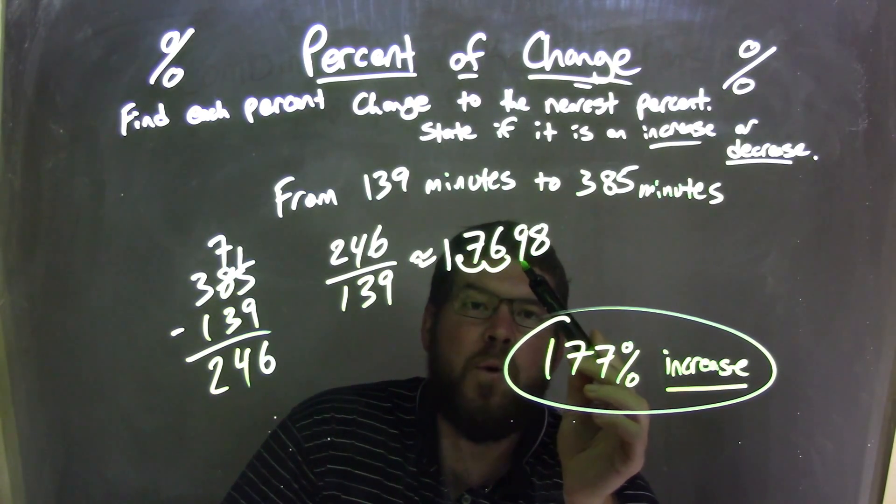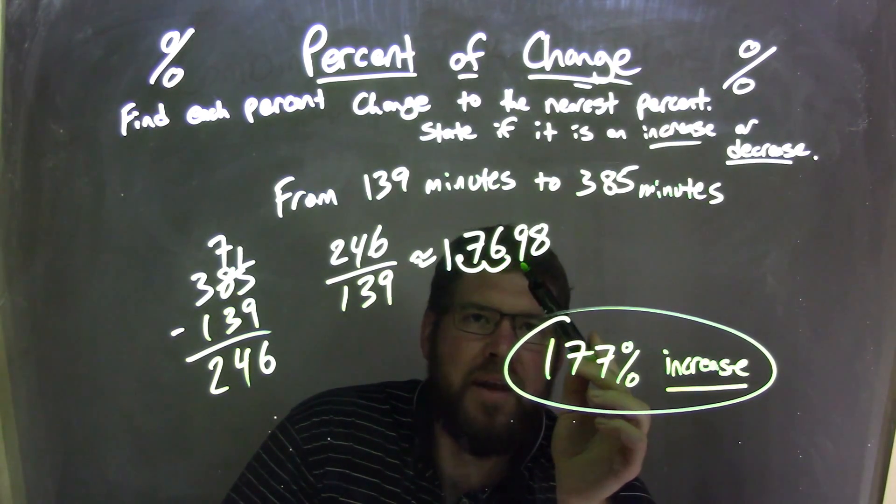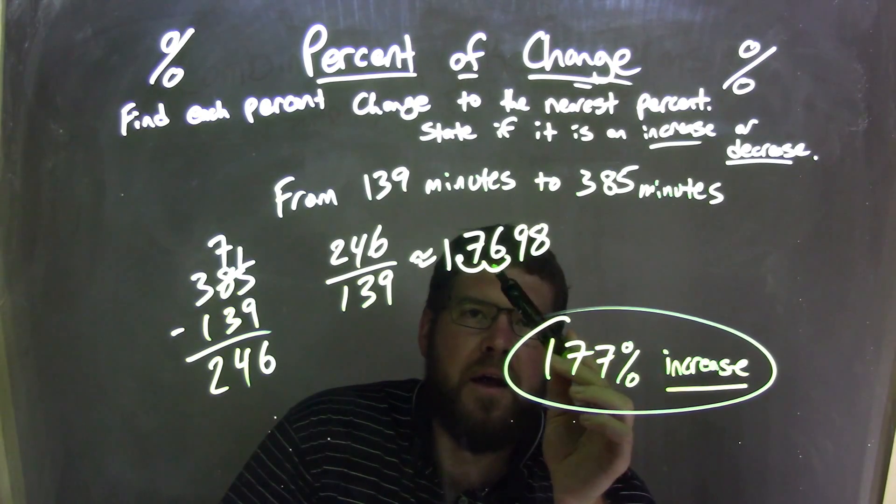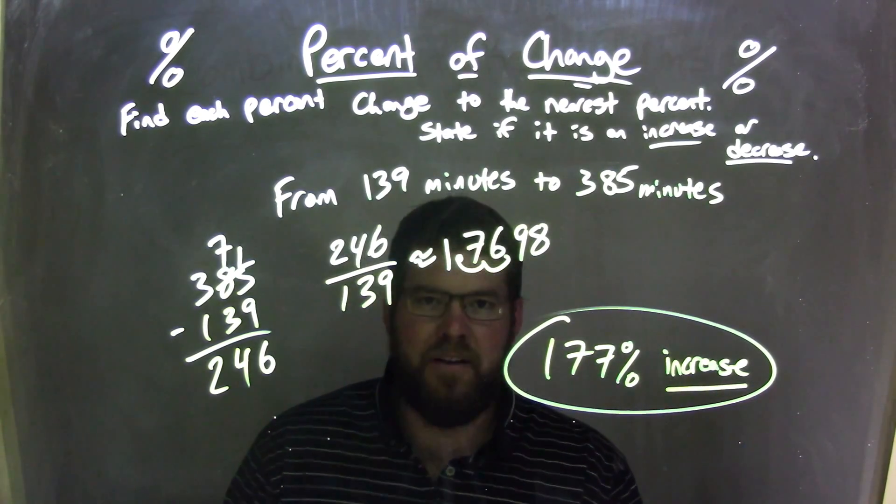And we got 176.98. Then from there, we had to round to the nearest percent, so that 9 caused that 6 to round up. We looked at the number right after the last number, 6, and looked at 9. And so that 9 caused 6 to round up, so now we have a 177% increase as our final answer.